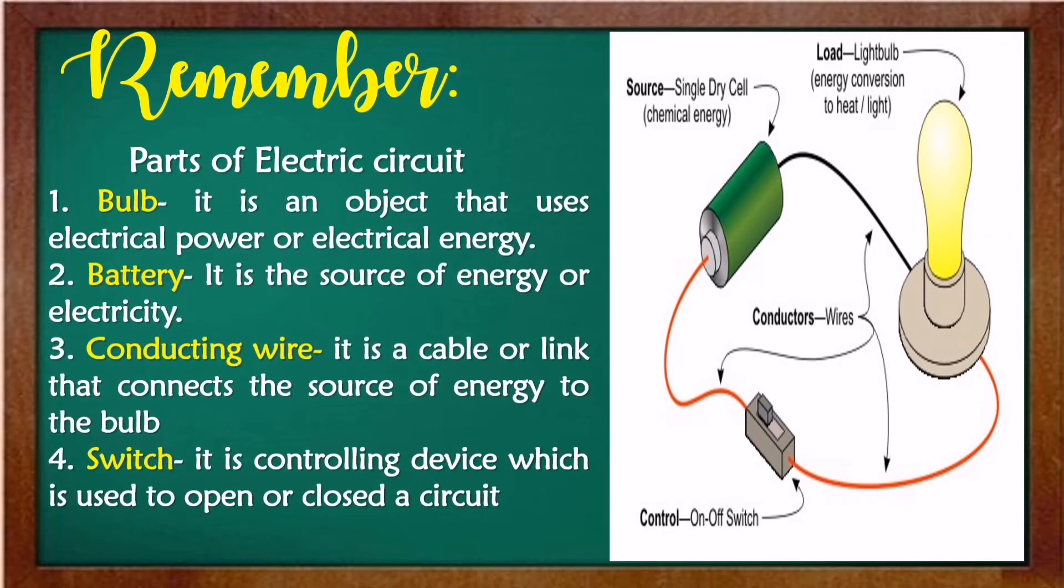Remember, parts of electric circuits are bulbs. It is an object that uses electrical power or electrical energy. Number two is the battery. It is the source of energy or electricity. Number three, conducting wire. It is a cable or link that connects the source of energy to the bulb. Number four, switch. It is a controlling device which is used to open or close a circuit. Just look at the pictures.